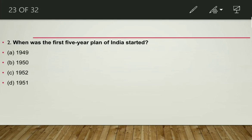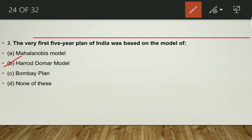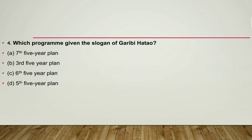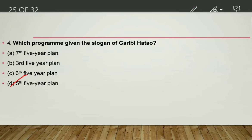The First Five Year Plan was based on the Harrod-Domar model. The next question: which program was given the slogan 'Garibi Hatao'? The answer is the Fifth Five Year Plan, with plan period from 1974 to 1979. Indira Gandhi gave the slogan. The plan could not complete until 1979 due to the Janata government and ended one year early in 1978.